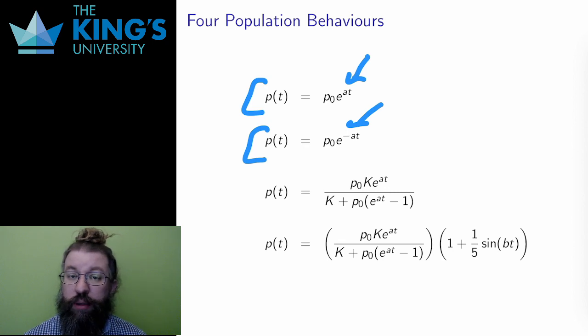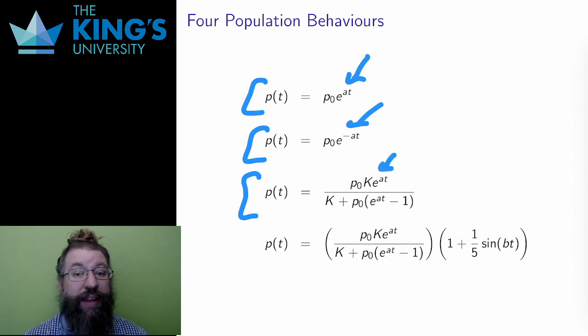The third is more complicated, but I can use asymptotic analysis. The order of the top is e to the at, and the asymptotic order of the bottom is also e to the at. Therefore, I need the leading coefficients.